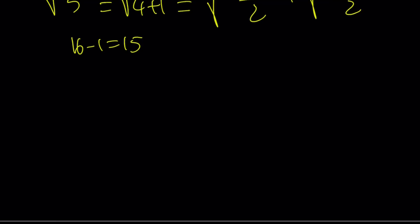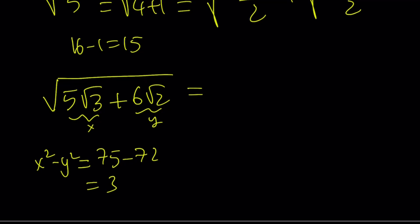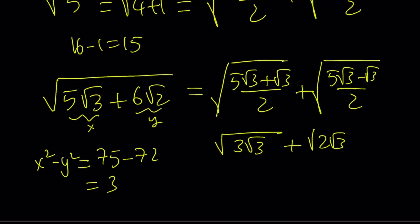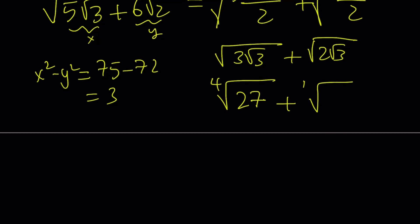Now let's use it for our main example: the square root of 5√3 plus 6√2. Here x is 5√3 and y is 6√2. Let's evaluate x squared minus y squared first: that's 25 times 3 minus 36 times 2, which is 75 minus 72 equals 3. So the expression can be written as the square root of [(5√3 plus √3) divided by 2] plus the square root of [(5√3 minus √3) divided by 2]. Simplifying, we get the square root of 3√3 plus the square root of 2√3. Since these are radicals inside radicals, we can write this as the 4th root of 27 plus the 4th root of 12 — and that is the simplest denested form.